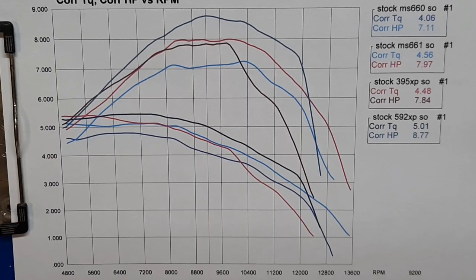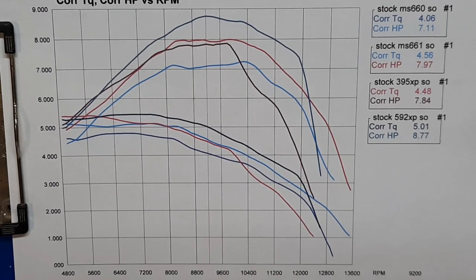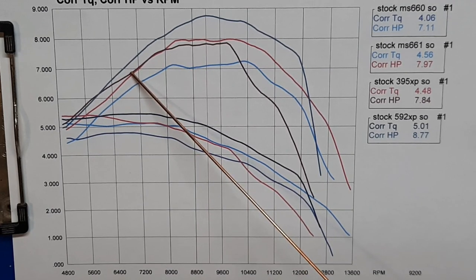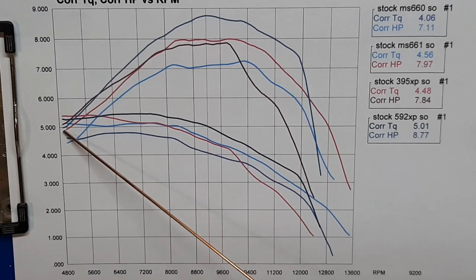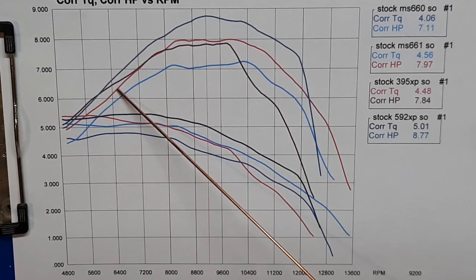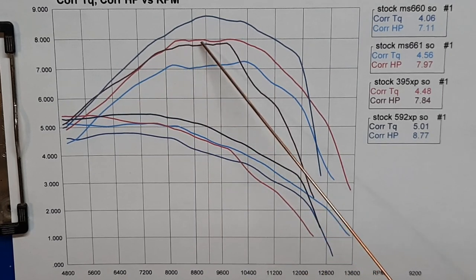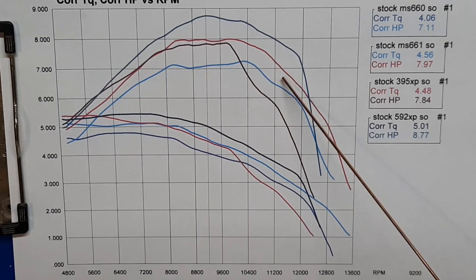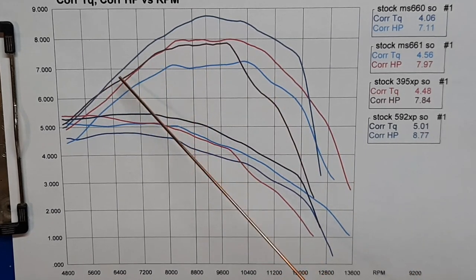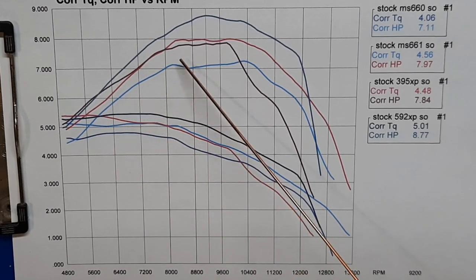All right, you see the 395 from about 7000 down has better torque than the 660 and the 661, but from about 8000 up the 661 starts pulling away, feels stronger. The more you dog it in on the 395, the 661 and the 660 are both going to fall right off.